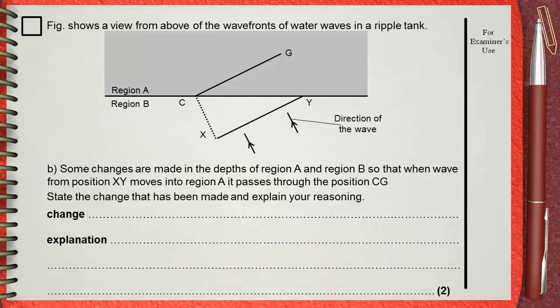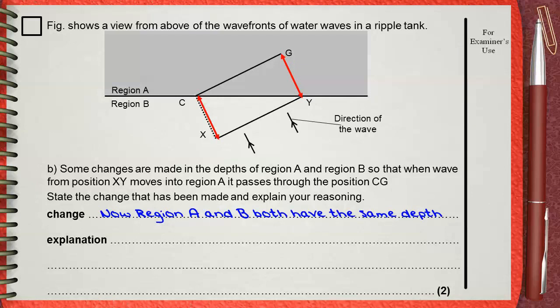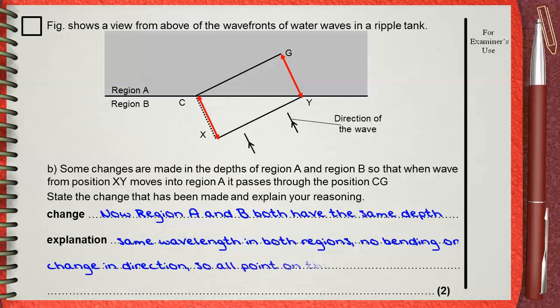Now it's clear that the wavelength and wave speed in region A is the same as in region B. X travels to C in the same time Y travels to G — the same distance for X and Y in the same time — meaning the same speed. This indicates regions A and B have the same depth. The change made is that region A and region B now both have the same depth. Explanation: same wavelength in both regions, no bending or change in direction, so all points on the wave travel with the same speed.